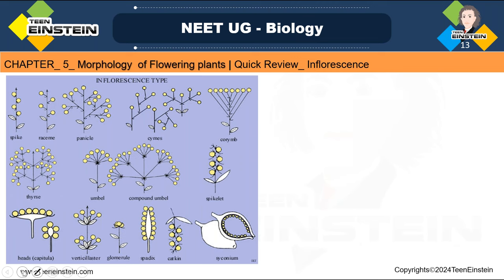In this class we are going to learn about inflorescence. What is inflorescence? The arrangement of flowers on the floral axis is called inflorescence. This is the floral axis and how flowers are arranged on it — that is the inflorescence. There are different types of inflorescence.